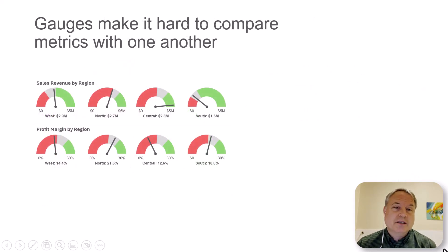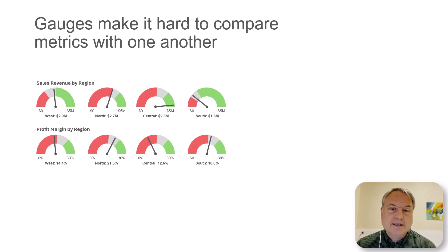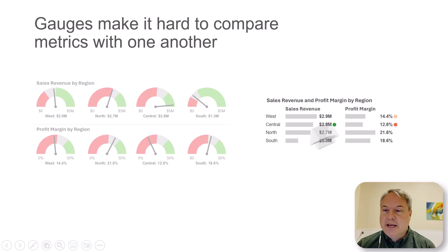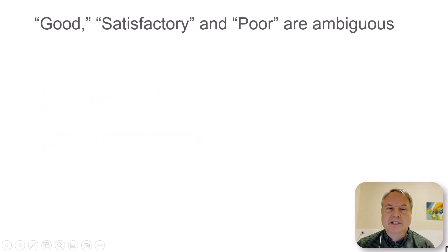Gauges also make it hard to compare metrics with one another. Here I have sales by region with my four regions, and I'm probably going to want to compare them — what was my best region, what was my worst region in terms of quantity of sales? I can get there, but if I pair some simple bars with action dots I can see right away: this is my biggest region, this is my smallest region, and the north actually had the highest profit margin. I can get there from gauges, but it's just going to be a lot slower.